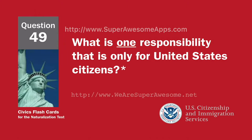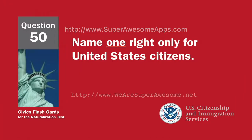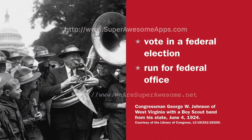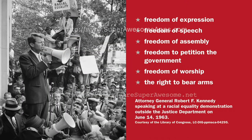What is one responsibility that is only for United States citizens? Serve on a jury. Vote in a federal election. Name one right only for United States citizens. Vote in a federal election. Run for federal office. What are two rights of everyone living in the United States? Freedom of expression. Freedom of speech. Freedom of assembly. Freedom to petition the government. Freedom of worship. The right to bear arms.